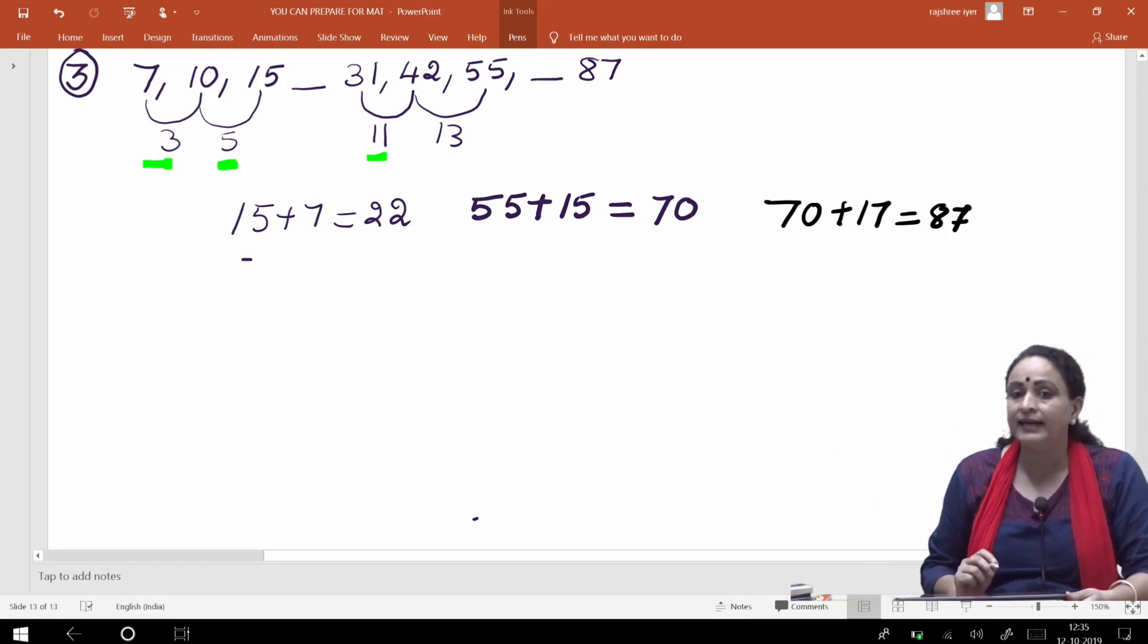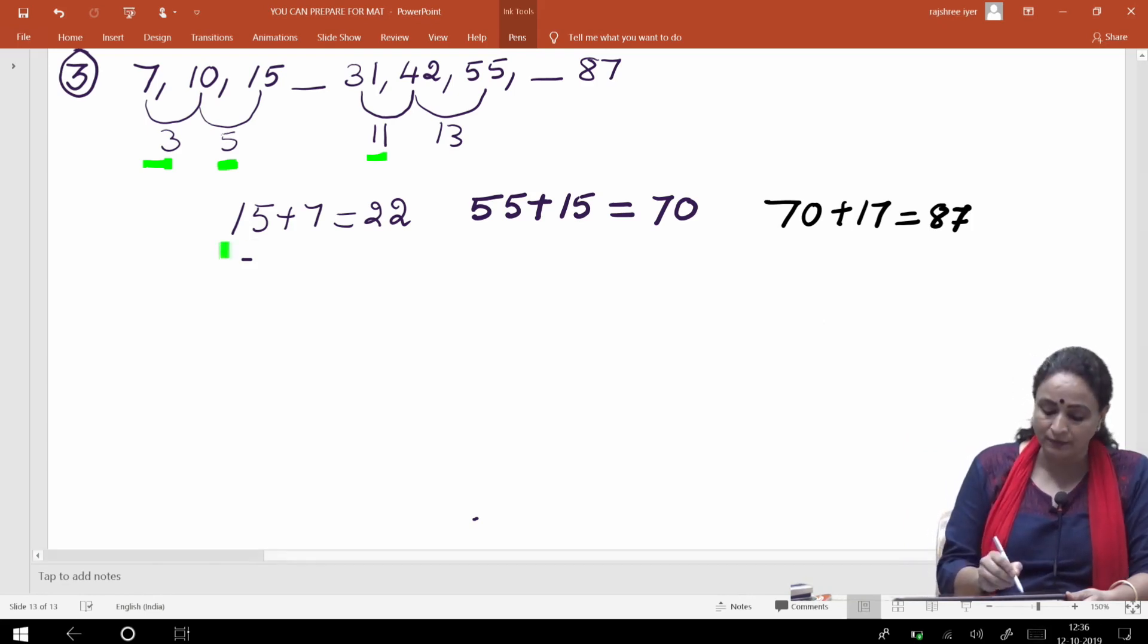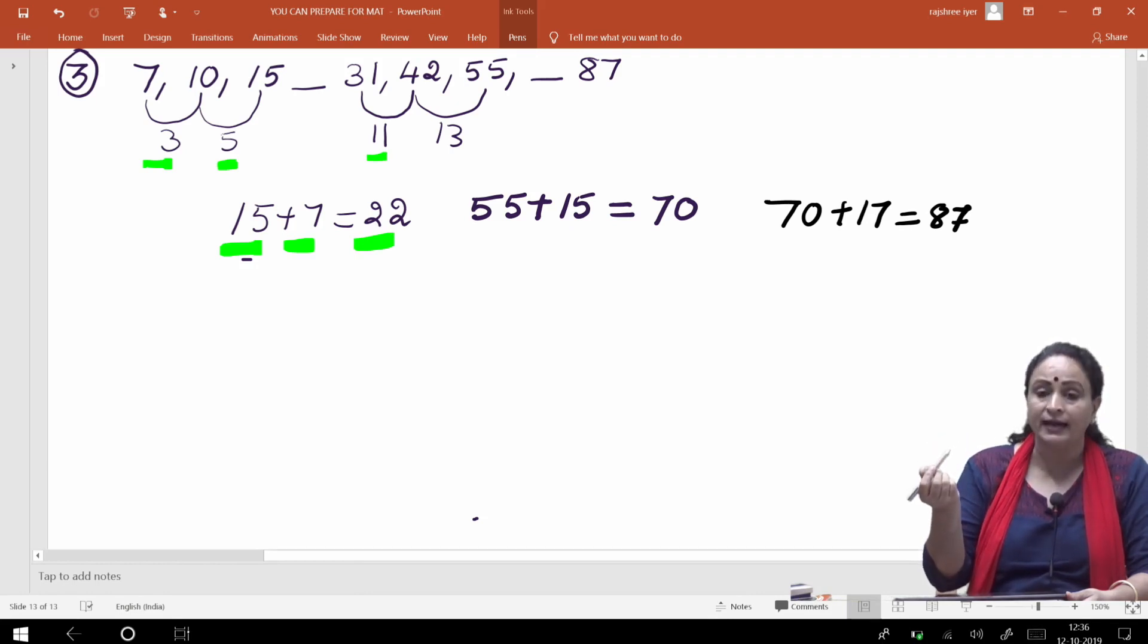So 3, 3 ke baad 5, 5 ke baad kya aata hai? 7. Yani 15 mein kya add karna chahiye ki jo dash ka number mil jaaye, toh 15 plus 7 aata hai, that is 22. Ab chahiye ga, 22 mein aapne add kiya hai 9, 9 plus 22, 31 aa raha hai, sahih mil gaya.